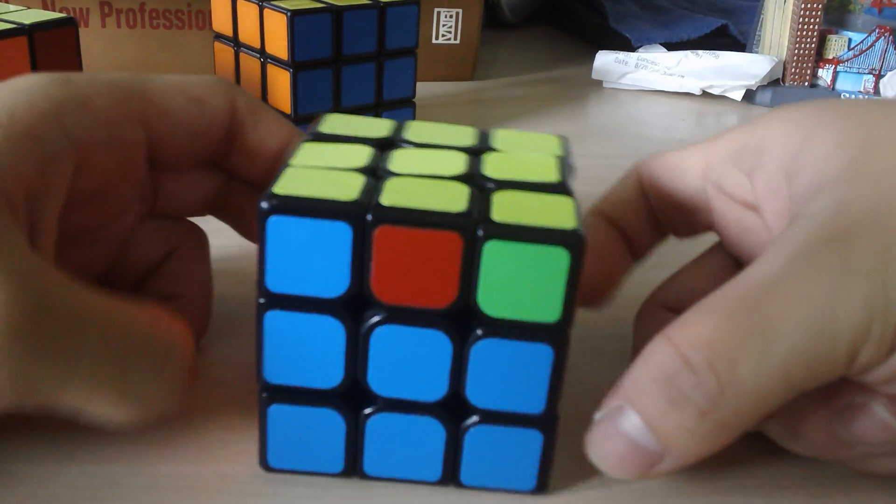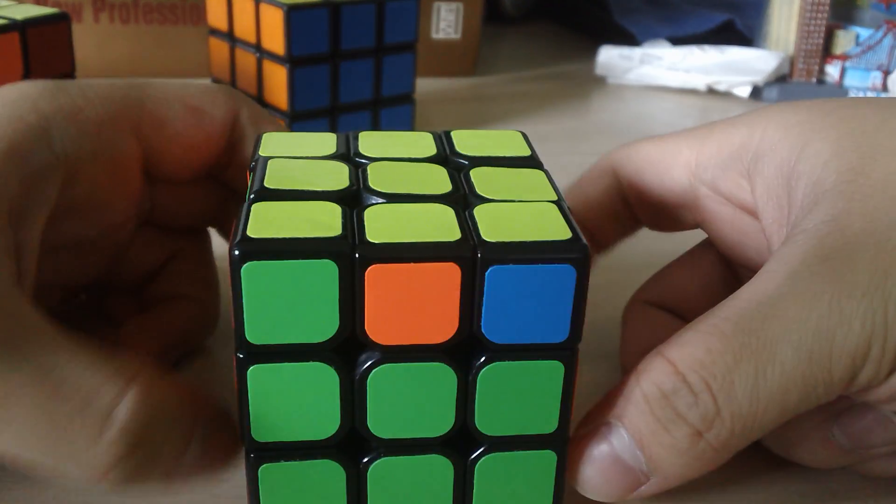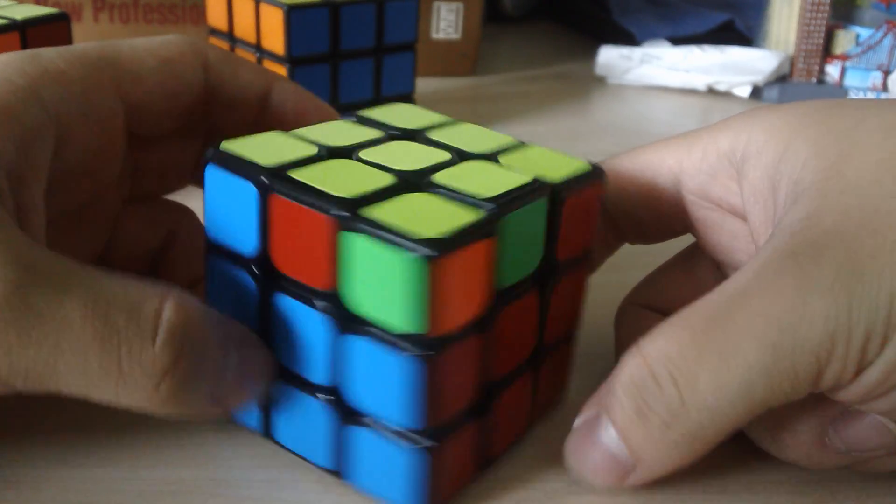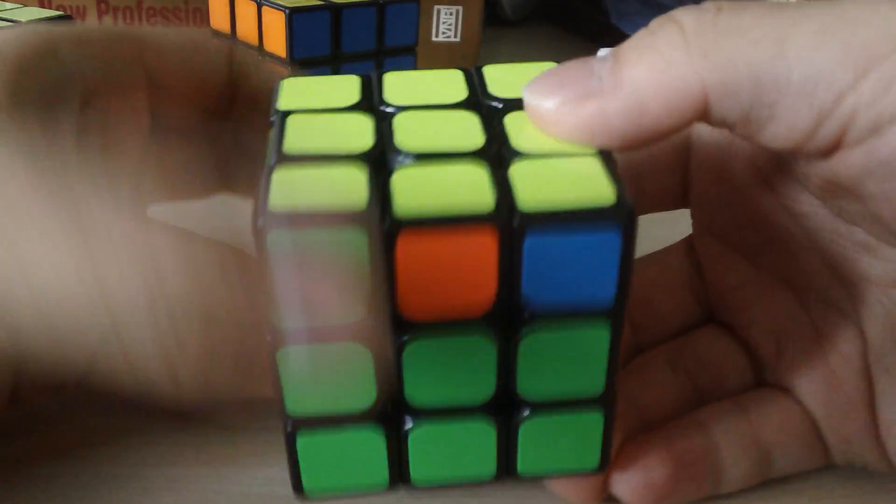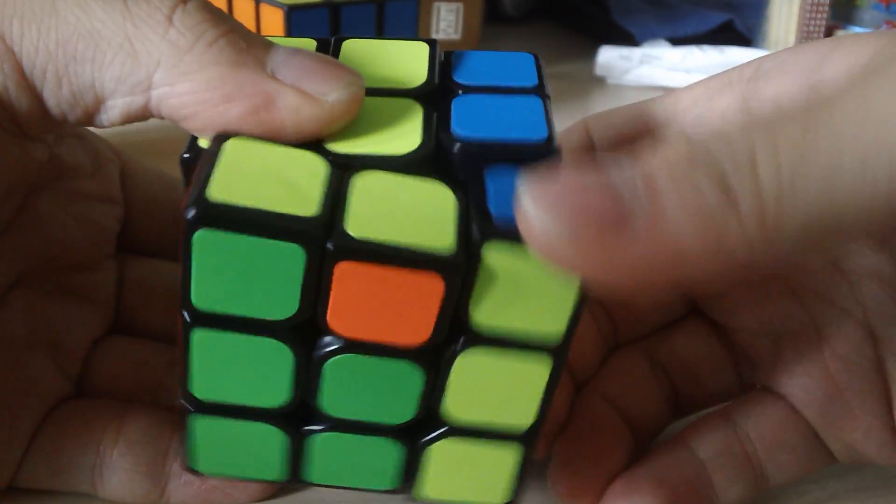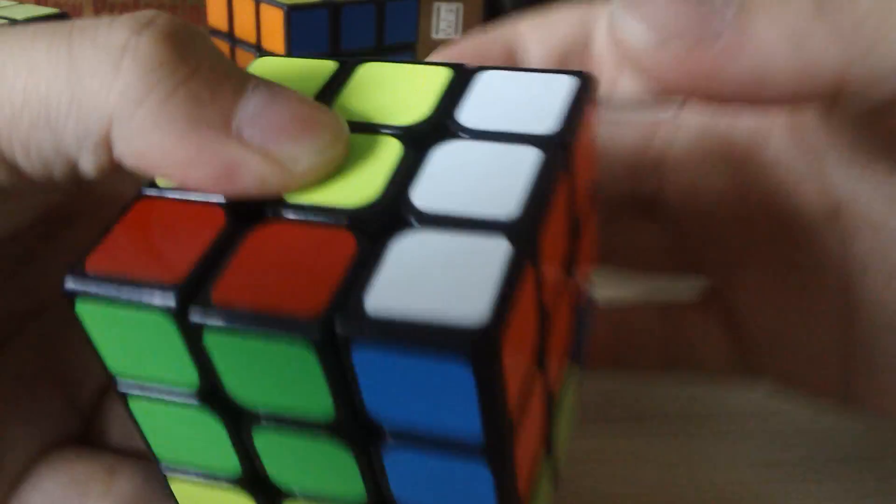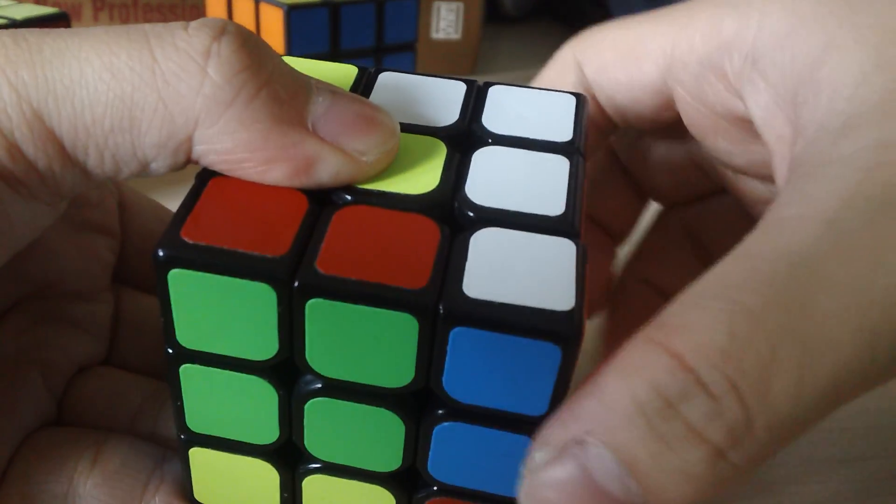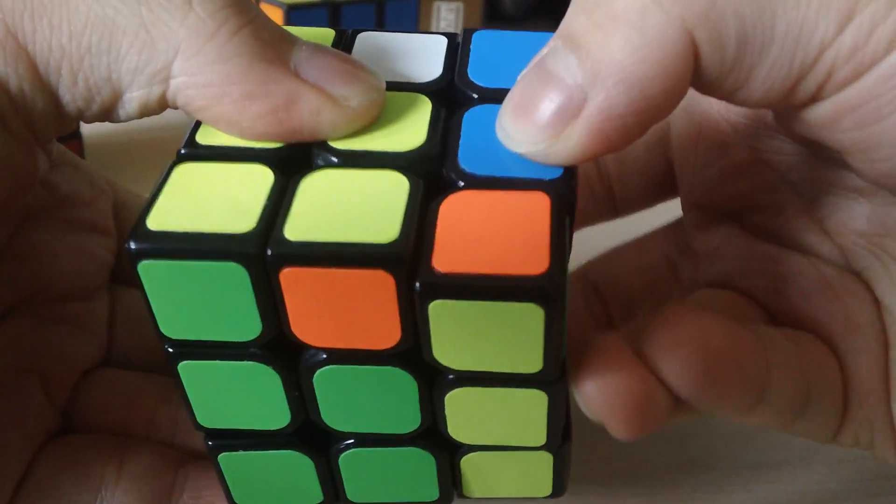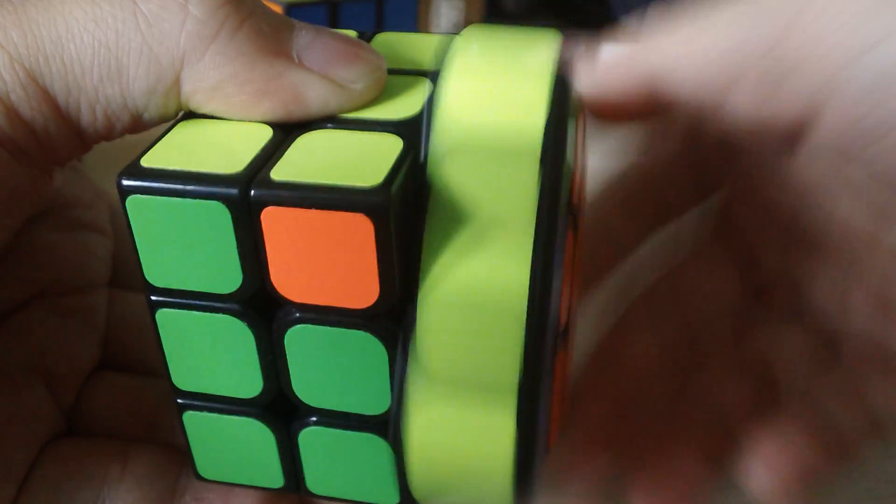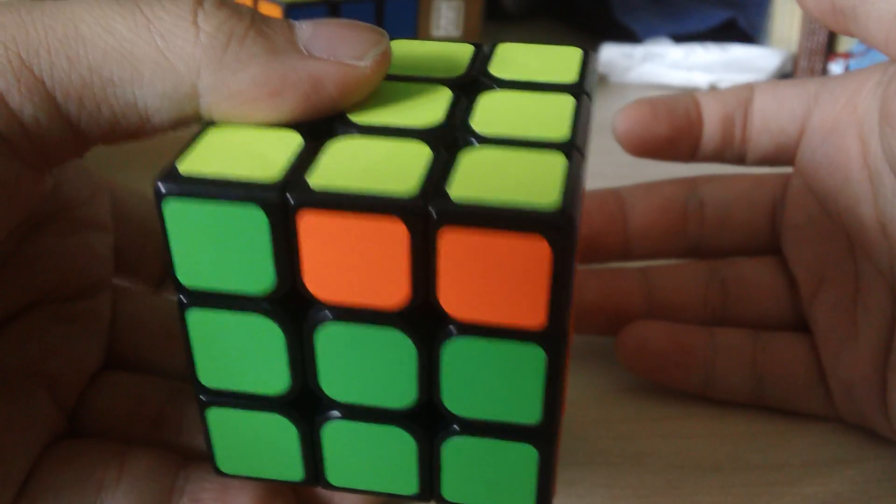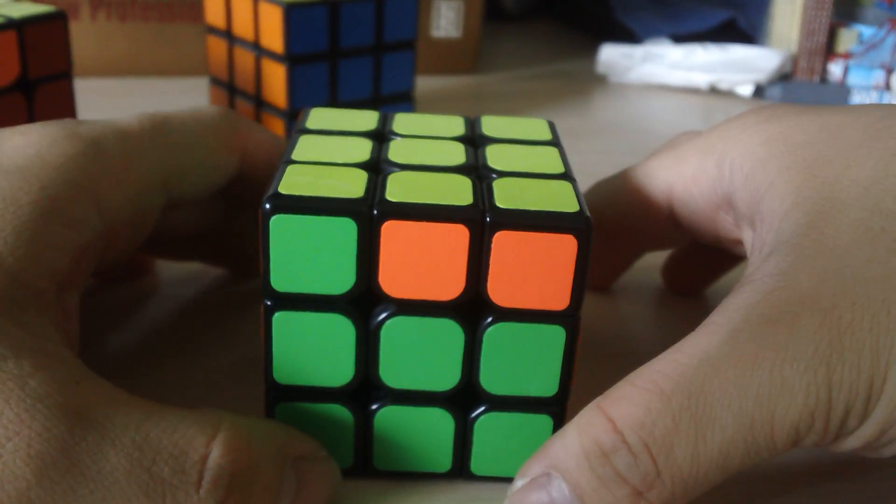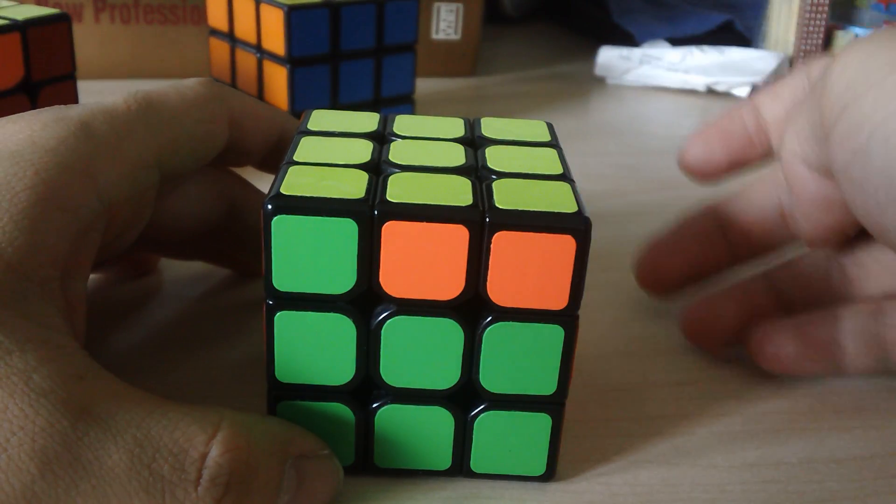Let's do another example. These do not have headlights either, so we have to apply the algorithm twice again. Right, front, right, back twice, right, front, right, back twice, right twice.